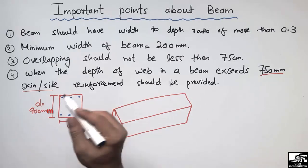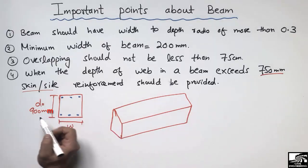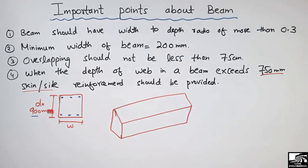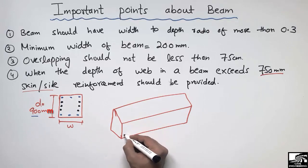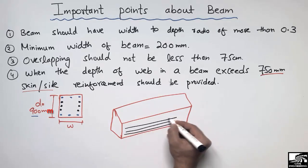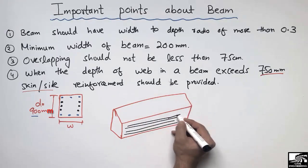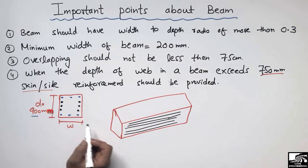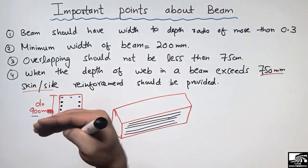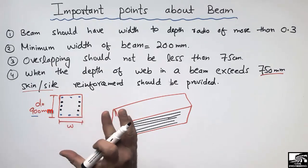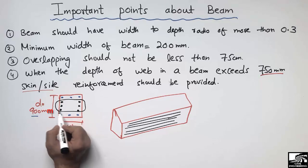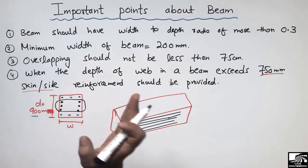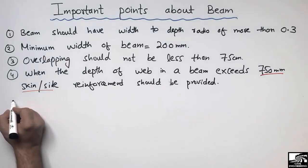If the depth is more than 750mm, such as 900mm, we provide skin or side reinforcement along the side face of the beam. These are provided along the depth of the beam to avoid cracks forming along the height of the beam. Due to the greater depth, cracks can develop, so skin reinforcement is provided along the depth whenever it exceeds 750mm.